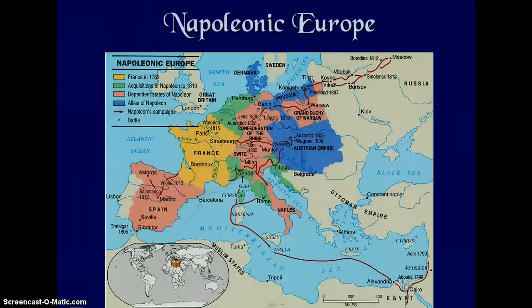This is Napoleon's Europe. France in 1789 is shown in yellow. Anything green on the map is what Napoleon added to his empire by 1810. The red areas are dependent states of Napoleon, and the allies of Napoleon at the time included the Austrian Empire, Denmark, and Prussia.